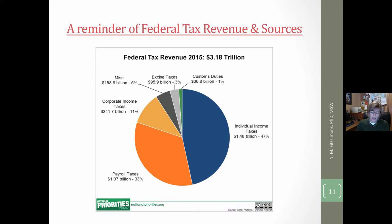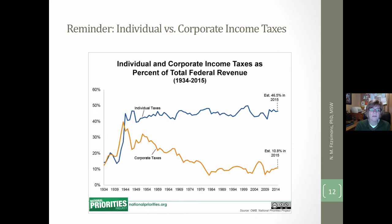These are some updated slides. This one is a reminder of federal government revenue sources through taxation. The large chunk comes from individual income taxes, followed by payroll taxes, with 11% coming from corporate income taxes. The updated slide shows the percentage of taxes since 1934 that come from corporate taxes versus individual income taxes.